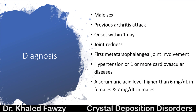Diagnostic criteria include: an older male with previous attacks, onset escalating within one day, red and swollen joint typically at the first metatarsophalangeal joint, hypertension or cardiovascular disease, and serum uric acid higher than 7 mg/dL in males and 6 mg/dL in females. Note that not every acute gout attack will have a high serum uric acid — it could be normal or high. If high, you must still exclude infection.